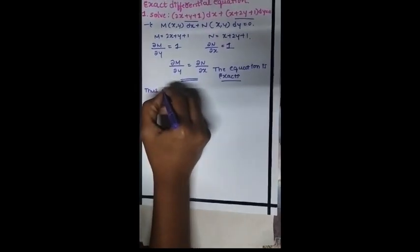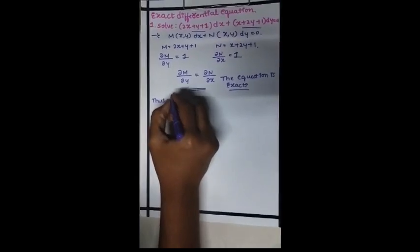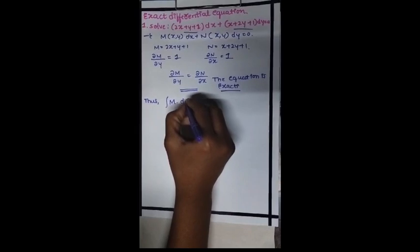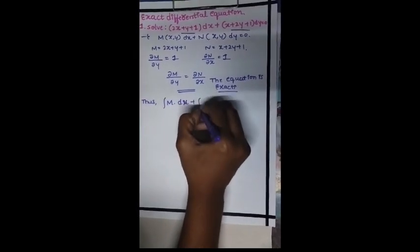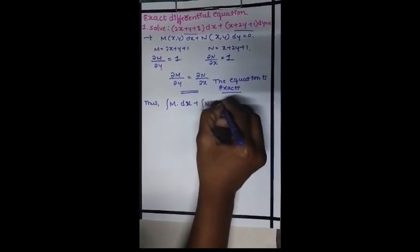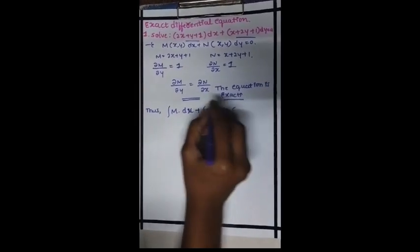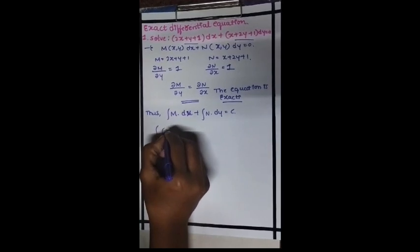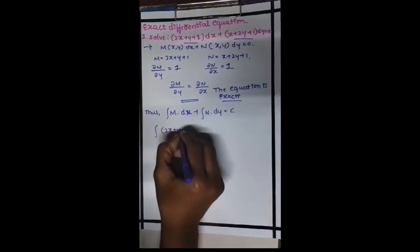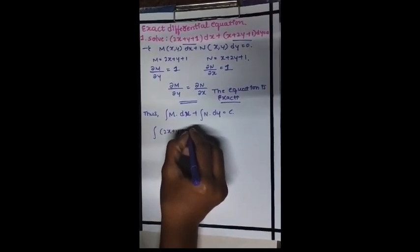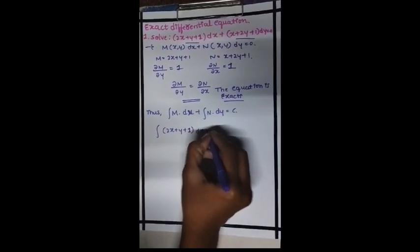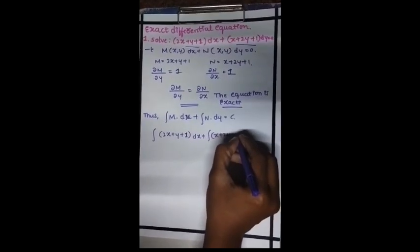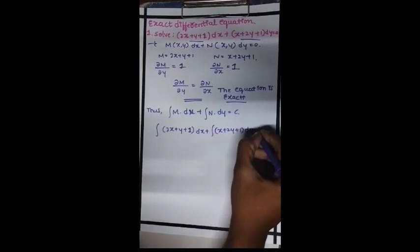We have to integrate M and N, so integration of M into dx plus integration of N into dy is equal to c. We have to substitute the M value (2x + y + 1) into dx plus N is (x + 2y + 1) into dy equal to c.